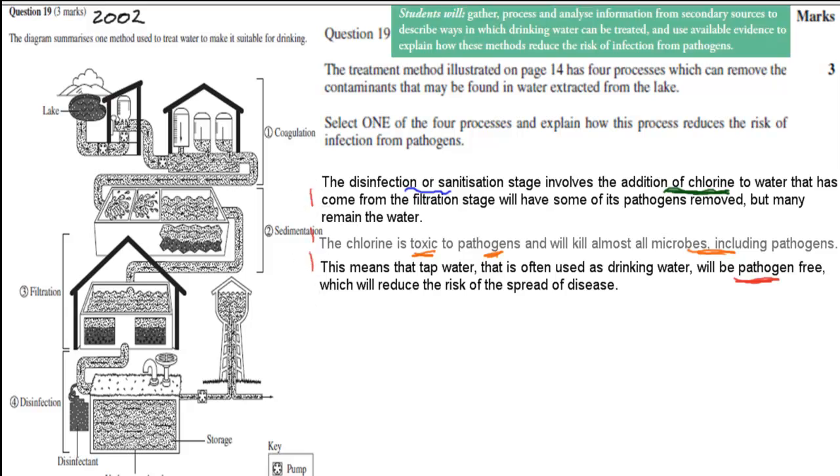And this question came from this dot point: Students will gather, process, and analyze information from secondary sources to describe ways in which drinking water can be treated, and this was one of those ways. And use available evidence to explain how these methods would reduce the risk of infection from pathogens. So here you can see, we've got all of it in the dot point, it's asking you to describe it, which it did, and then it's asking you how that reduces the risk of infection from pathogens.